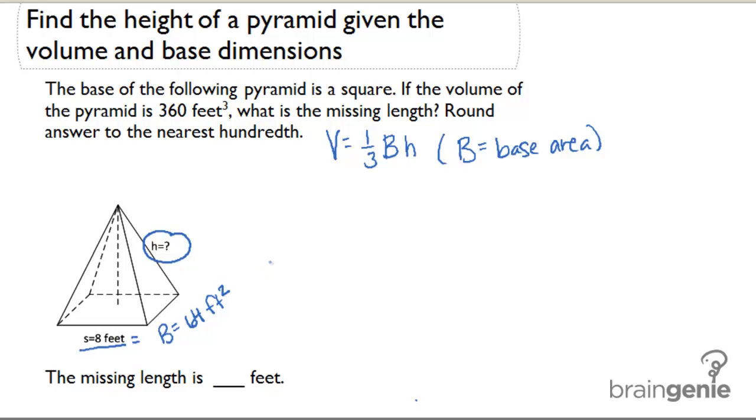Let's use this information to substitute in and solve for H. So we know volume is 360, that was given to us in the problem, equals one-third times 64 times H.